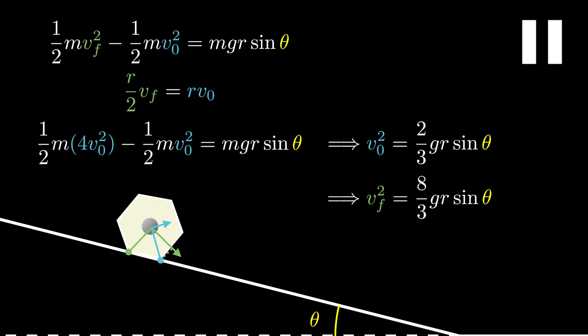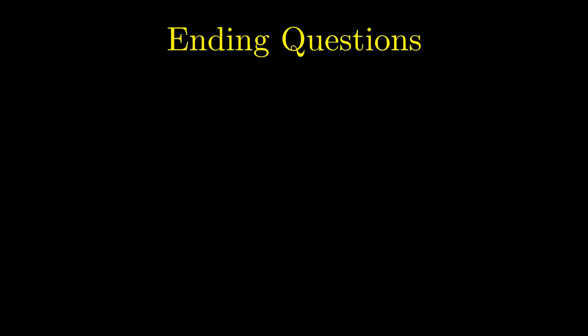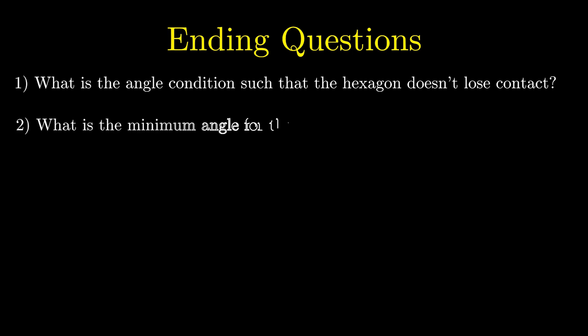Alright, now that we've solved it on this video with some exercises. I previously stated that we are assuming the hexagon doesn't fly off the plane due to a shallow angle. Try to find what angle condition is really necessary for this. If the angle is too large, gravity won't provide sufficient centripetal acceleration so it could lose contact. Moreover, if the angle is too small, the hexagon may come to a stop. What's the minimum angle for the terminal velocity to be non-zero? And with that, I'll end the video. Happy Holidays and see you in 2021.